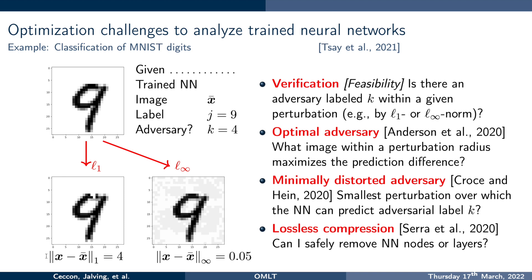So for instance, if I was to say my perturbation is going to be 5 with an L1 norm, then yes, there would be an adversary labeled 4 in that given perturbation. But if I was going to take an L infinity norm and say that my perturbation was 0.01, well then no, there is not going to be an image that is recognized as a 4 within that perturbation. So that's a verification problem, basically the existence or not of an adversary.